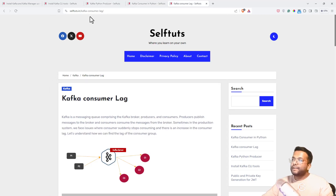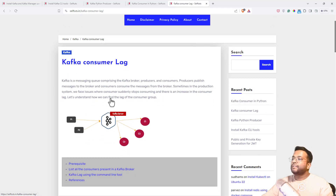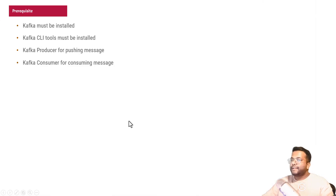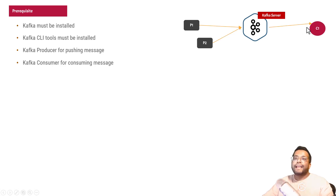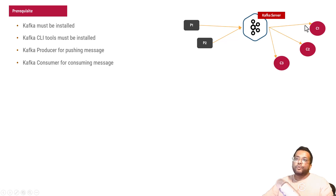I've also written a blog post specifically on Kafka consumer lag, which you can follow as well. So let's see what we're going to do. There is a Kafka server, there will be producers P1 and P2, and there can be N number of consumers — C1, C2, and C3. We'll try to find the lag in these consumers using the Kafka CLI tool.